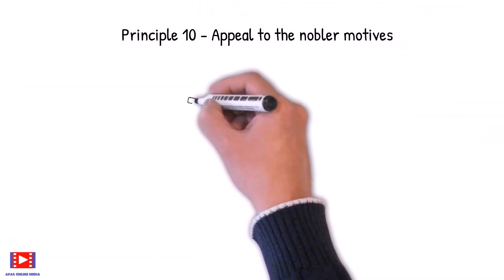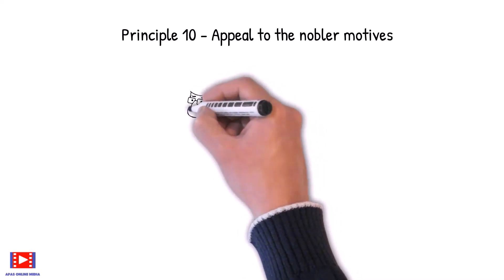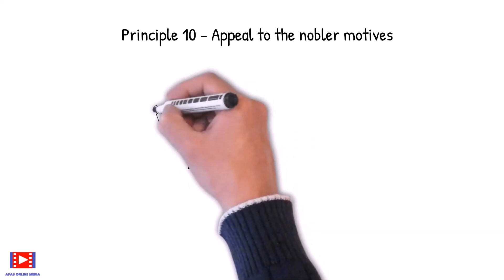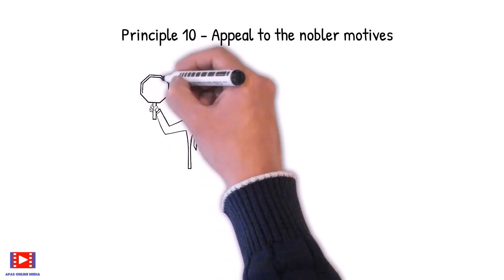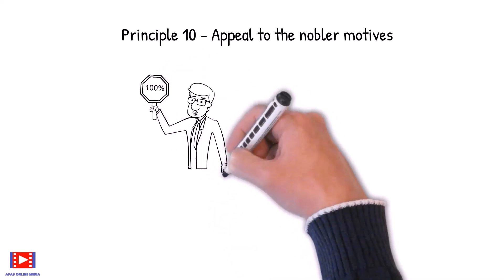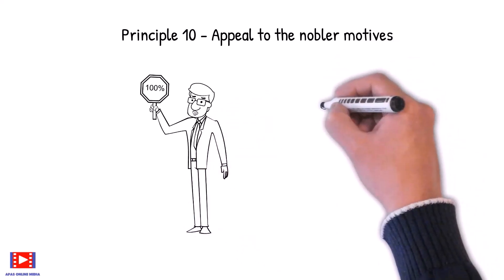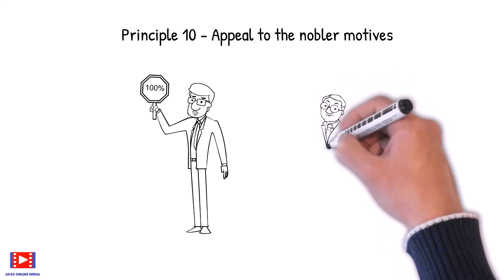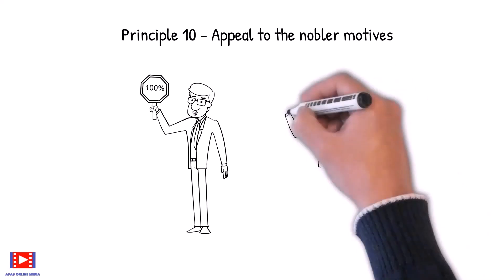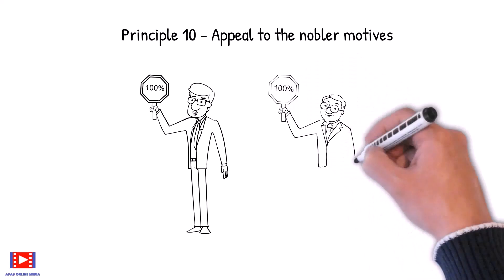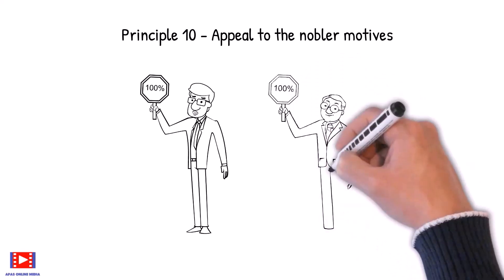Principle 10: Appeal to the nobler motives. We all have disagreements, conflicts and arguments. Just stop yourself in this moment and think: why are you having these disagreements or conflicts in the first place? Do we really need to continue our arguments or perhaps find an amicable way to resolve? Think about what you want to achieve by the end of the day. If it is harmony and peace, then those are the nobler motives one should aim for.